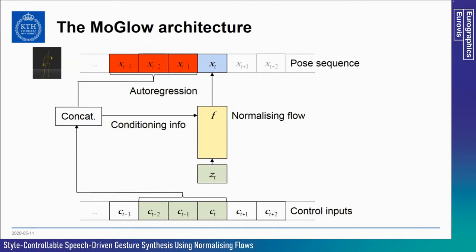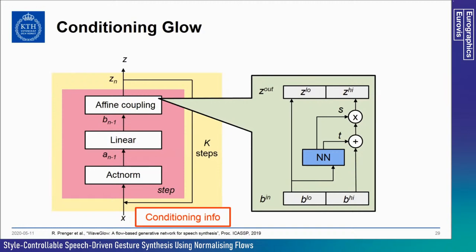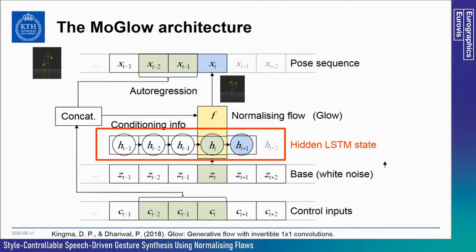During training, MOGLOW learns a series of invertible transformations to map between the space of next poses and a normally distributed latent space Z. To generate a new pose, we randomly sample a new Z value and transform it through the flow using previous poses and the control signal as conditioning. We use GLOW from OpenAI as our normalizing flow. The conditioning information enters as additional inputs to the neural network in the affine coupling layer. MOGLOW also introduces a recurrent latent state enabling long-term memory, resulting in two mechanisms for temporal consistency: autoregression and the hidden recurrent state.